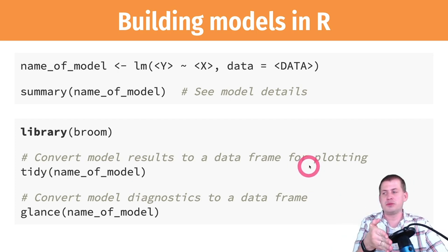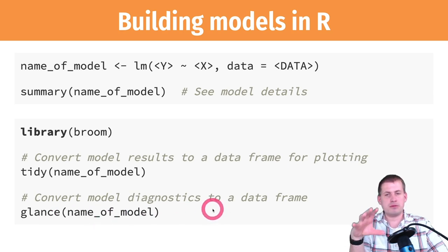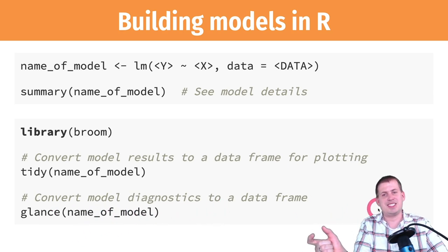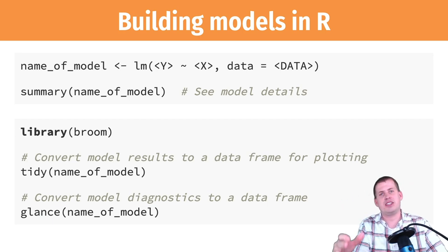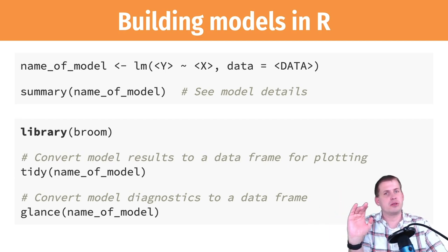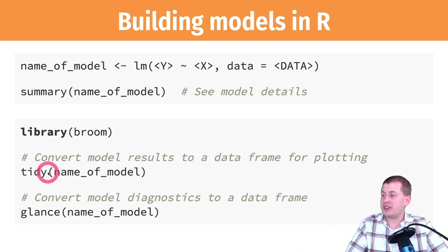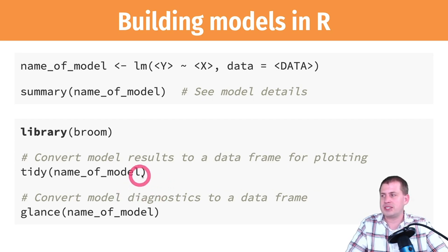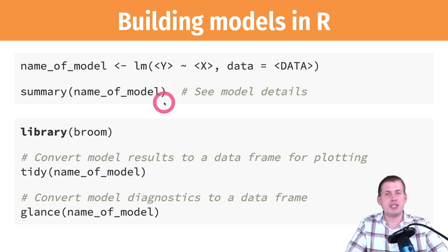If you use glance(), it converts all the diagnostics — R-squared, AIC, F-statistic, and other model statistics — into a data frame that you can then select specific columns from or filter or summarize. Generally it's better to use these functions to see model results because it's a lot cleaner; it's just tables you can manipulate. If you just do summary(), all you're going to see is text, which is hard to manipulate.